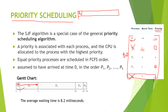After priority one and two, it comes to three — process one will execute its whole burst. After process one is over, it checks the next priority, which is process three having priority of four, so process three will be executed.